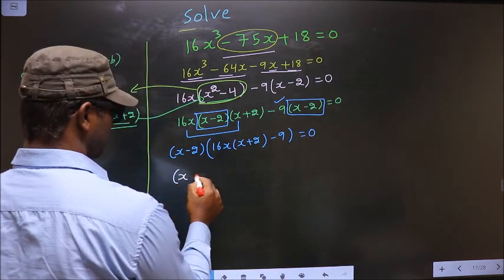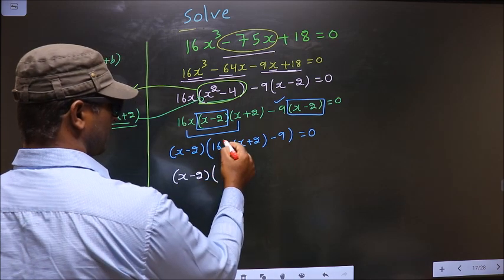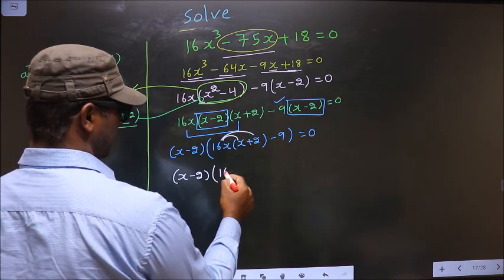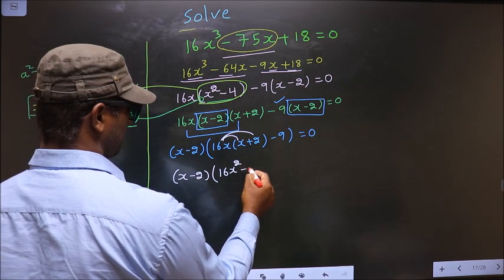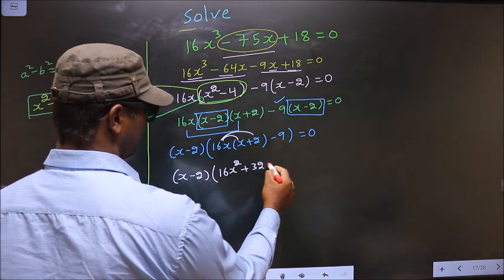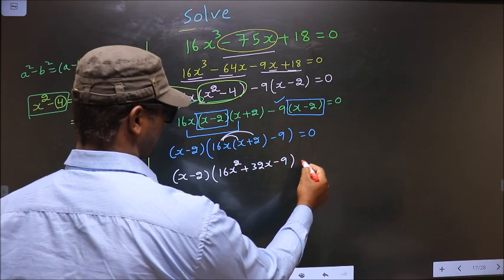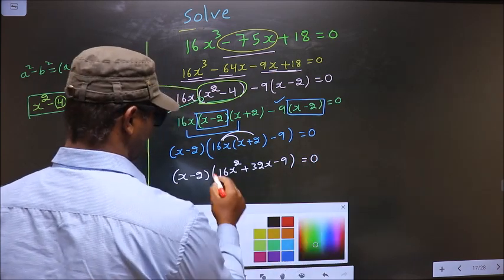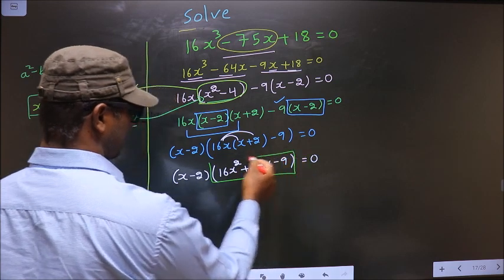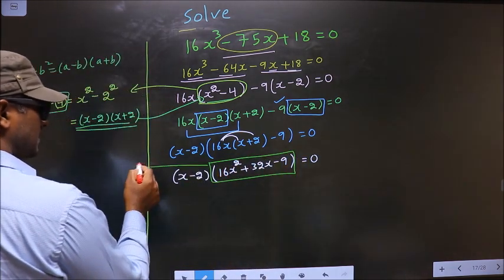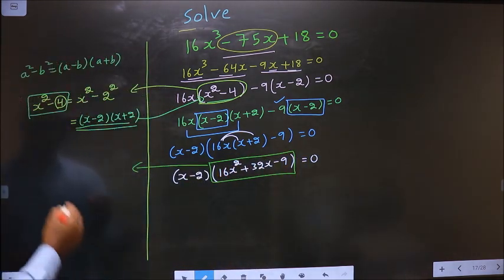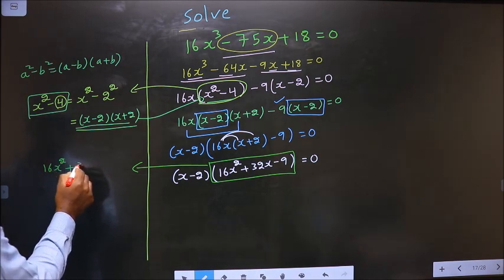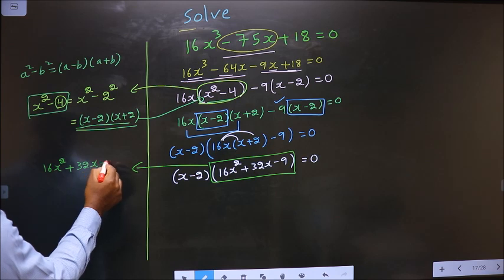So x minus 2 outside, and inside we are left with 16x times x plus 2 minus 9, equal to 0. Opening up the bracket gives us 16x squared plus 32x minus 9, equal to 0. Now we have a quadratic.